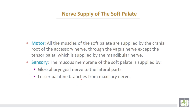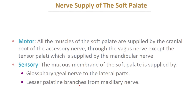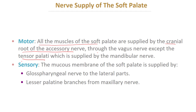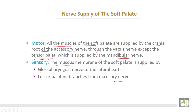The nerve supply of the soft palate — motor: all muscles of the soft palate are supplied by the cranial root of the accessory nerve (11th cranial nerve) through the vagus nerve, except tensor palatii which is supplied by the mandibular nerve. Sensory supply: the mucous membrane of the soft palate is supplied by the glossopharyngeal nerve to the lateral parts and the lesser palatine branch of the maxillary nerve.